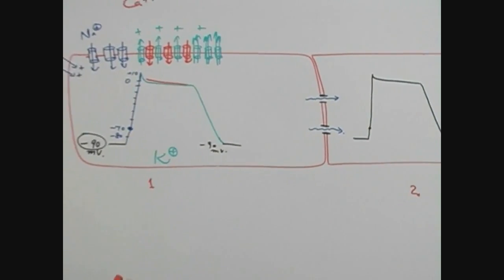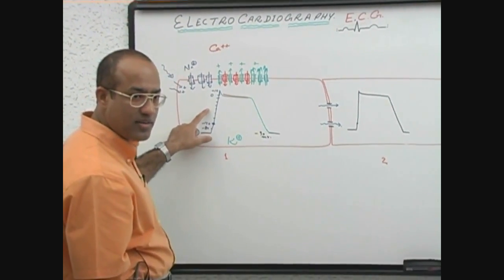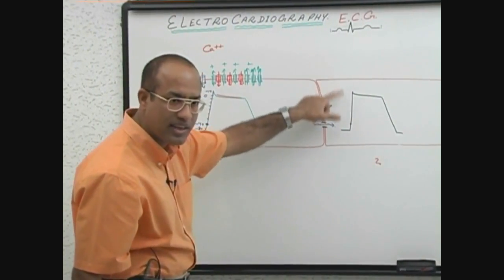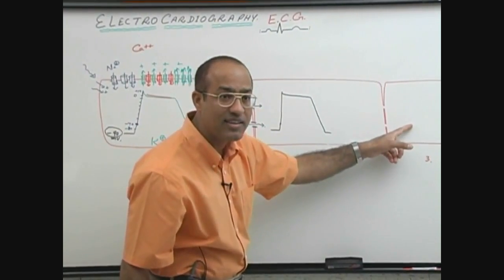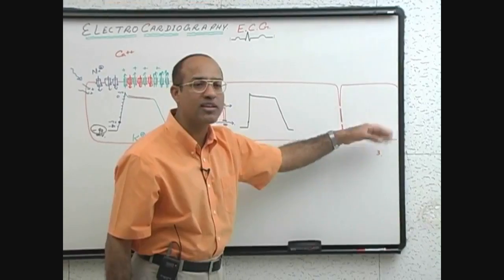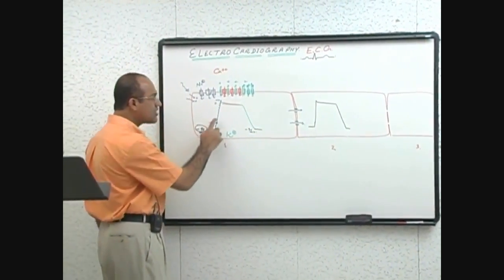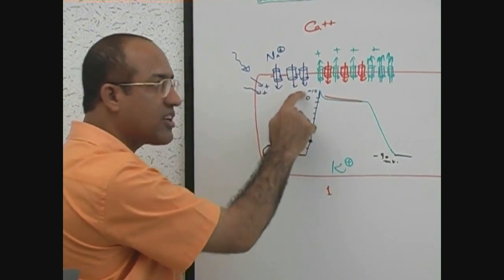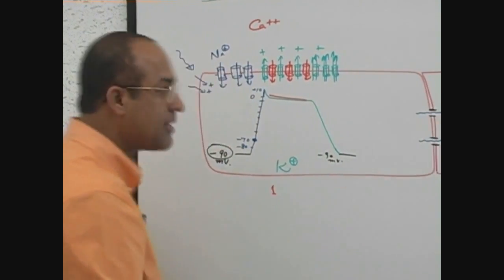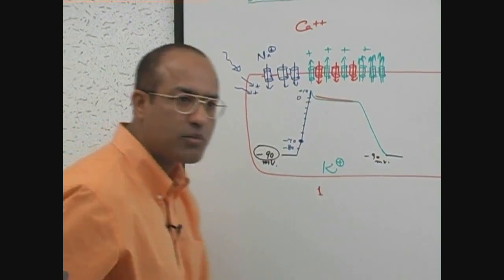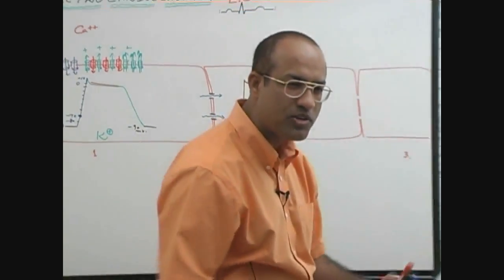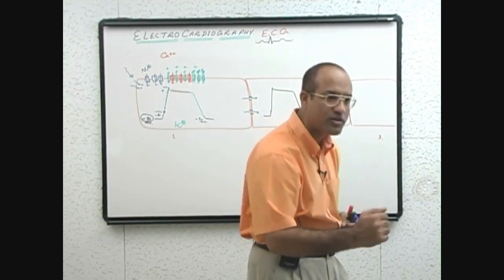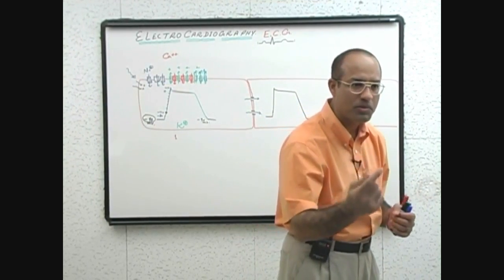Depolarization of one cell led to the depolarization of the second cell. When the second cell is depolarized and gains a lot of cations, it trickles the cations into the third cell, and then the third cell undergoes depolarization and repolarization. The membrane fluctuates from resting membrane potential to depolarization and then back to repolarization. Because this depolarization and repolarization are moving through cell membranes, this total electrical fluctuation is called action potential.